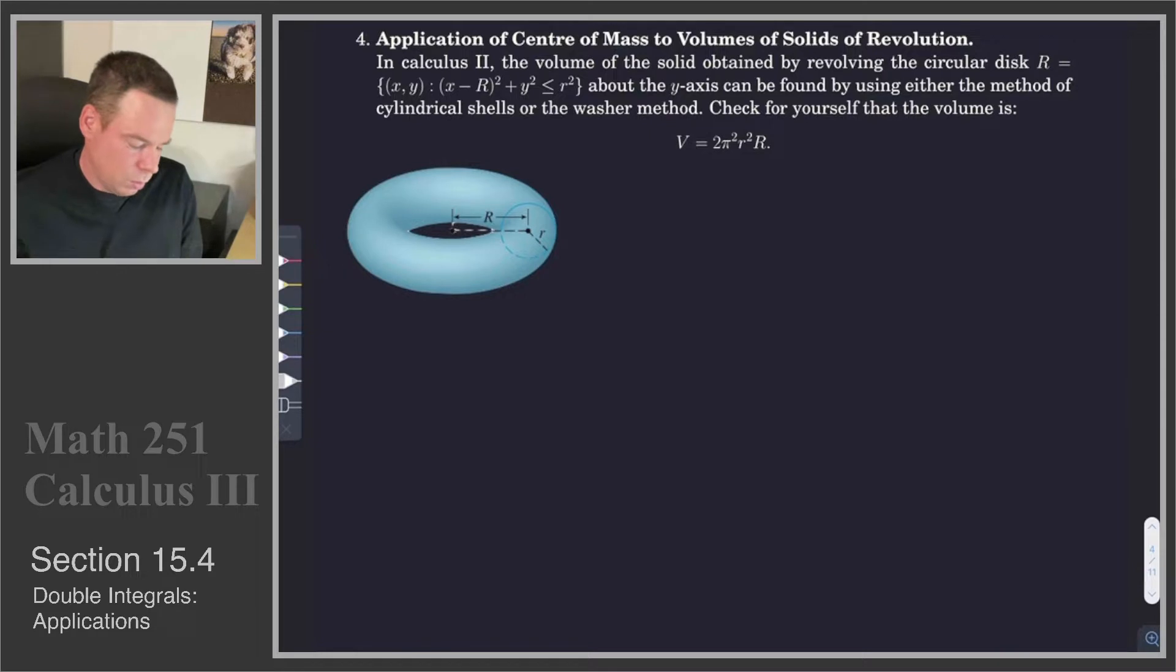In Calculus 2, the volume of a solid obtained by revolving the circular disk about the y-axis can be found by either using the method of cylindrical shells or the washer method. Check for yourself that the volume of this object is given by 2π² r² times R.